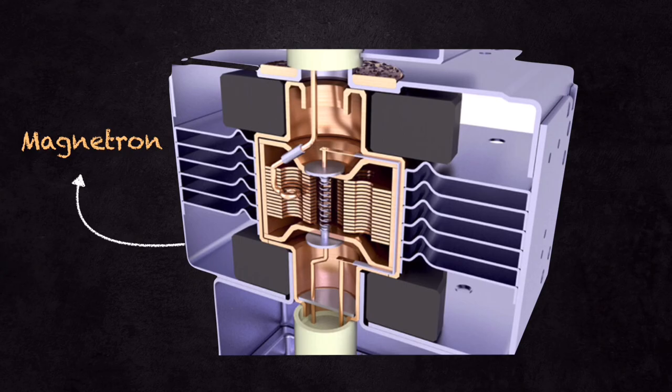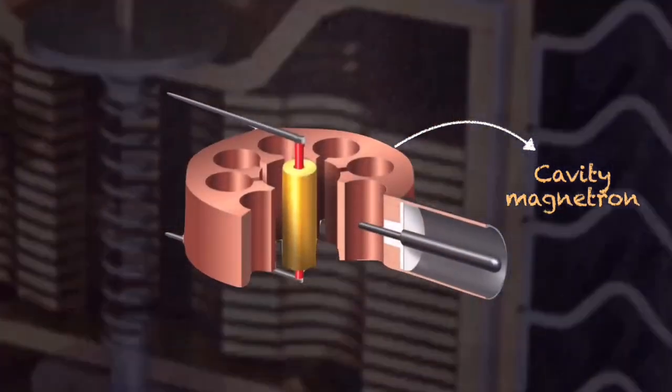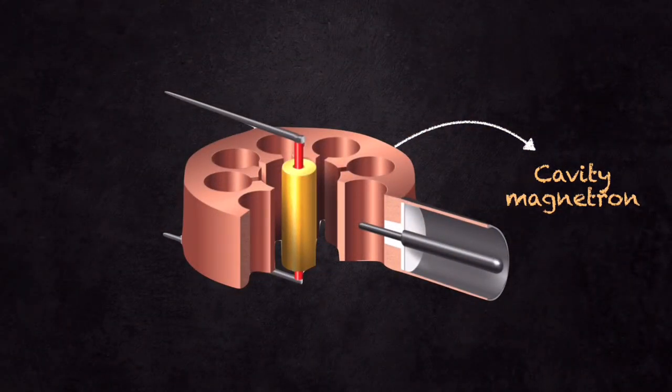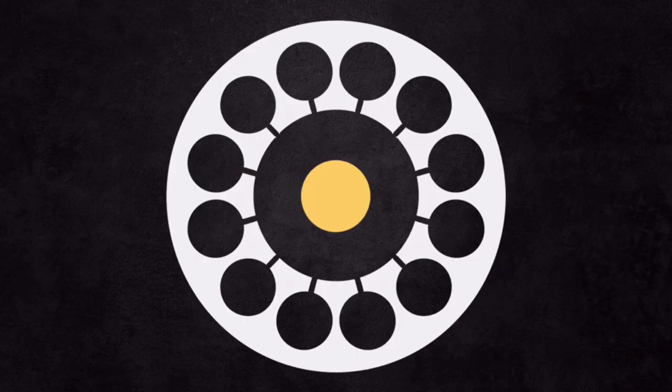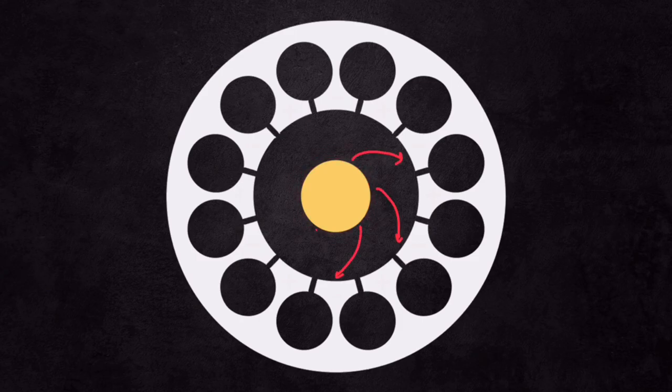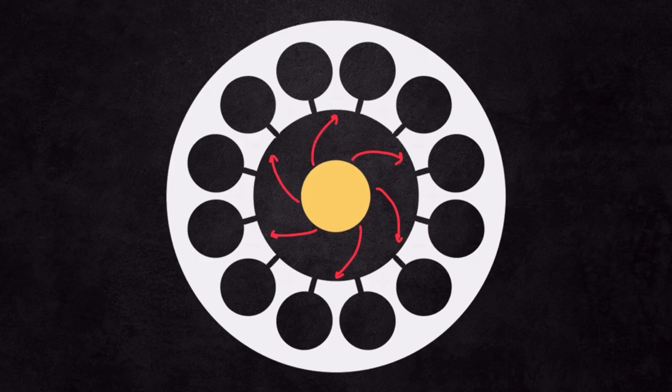The magnetron consists of the most fundamental element called cavity magnetron or resonant cavity, a high-power vacuum tube used for microwave production. The device is powered by heating the center cathode, which releases electrons that would tend to flow readily outward to the ring anode that surrounds it.